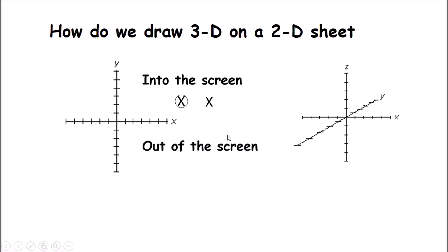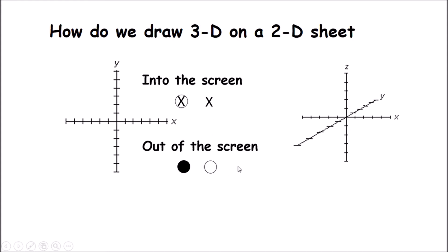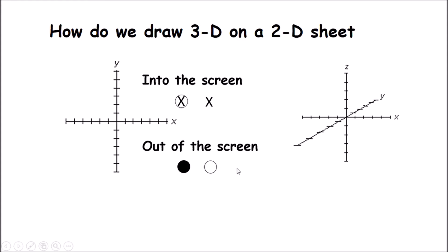If we have into the screen, we can also have out of the screen. Think of an arrow coming toward you — we can draw it as an open circle, sometimes with a dot in the middle, or sometimes a filled-in circle. So now we have all three dimensions: up and down, left and right, and into and out of the page.